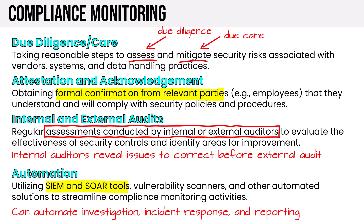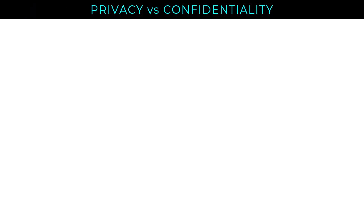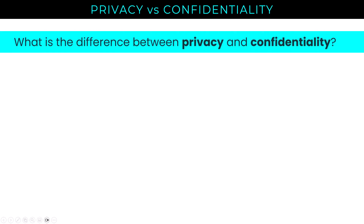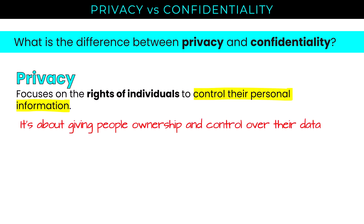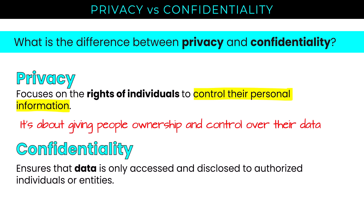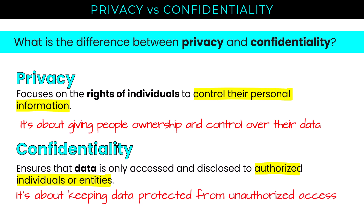These tools can automate investigation, incident response, and reporting. Moving on to privacy, I want to make sure we are clear on the difference between privacy and confidentiality. Privacy focuses on the rights of individuals to control their personal information — it's about giving people ownership and control over their data. Confidentiality, on the other hand, ensures that data is only accessed and disclosed to authorized individuals or entities — it's about keeping data protected from unauthorized access. To state it even more simply: privacy is about people; confidentiality is about data.